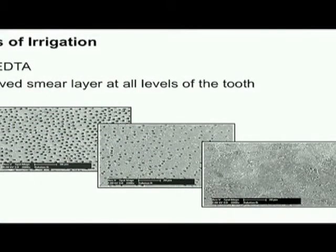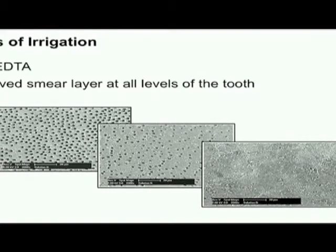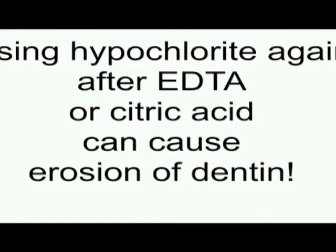This is not enough, because we know that bacteria may still be hiding in the dentine, and we would like to do the final rinse — the third irrigation of the root canal. We have been using hypochlorite and chlorhexidine for this.